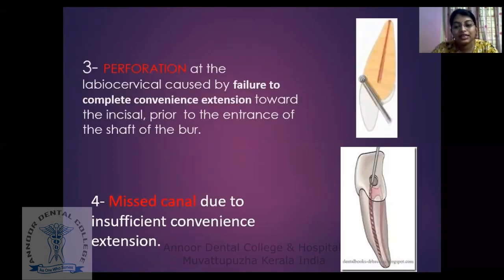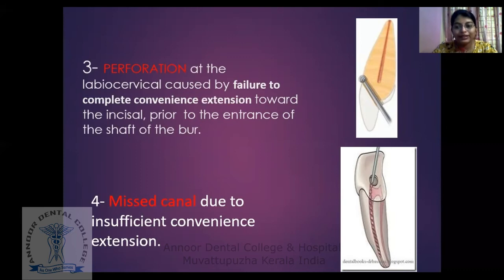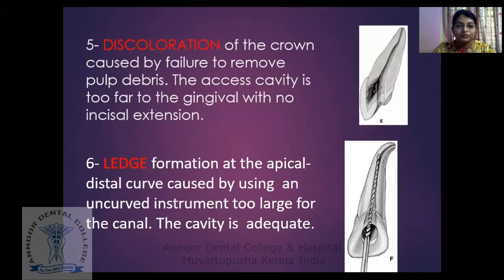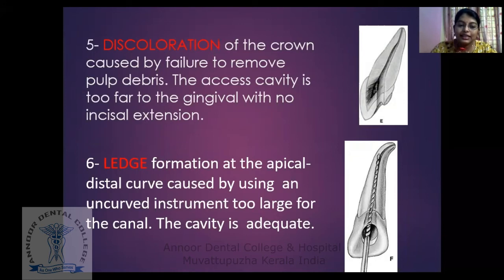The next error is perforation, which can occur when the angulation of the tooth is not followed properly. There are also more chances of a missed canal if the access opening is not proper — if you don't de-roof the pulp chamber, you can miss the canal. Next is discoloration, caused mainly when caries is not removed completely or pulp tissue remaining in the root canal is not removed completely. And next is ledge formation — since canals are not always straight, you have to pre-curve the instrument. If you push the file straight, it can lead to ledge formation.